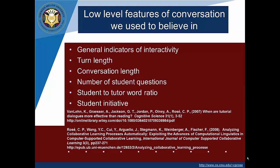This idea of transactivity is one that was associated strongly with one of their particular dimensions called social modes of co-construction. In that journal article you can see how we built on the idea of social modes of co-construction in our design of the feature space. That brings us to the connection between theory and computation: we start with the theory of learning, operationalize it in terms of properties of conversational interactions, and then use that understanding to motivate the kinds of features we use in machine learning.